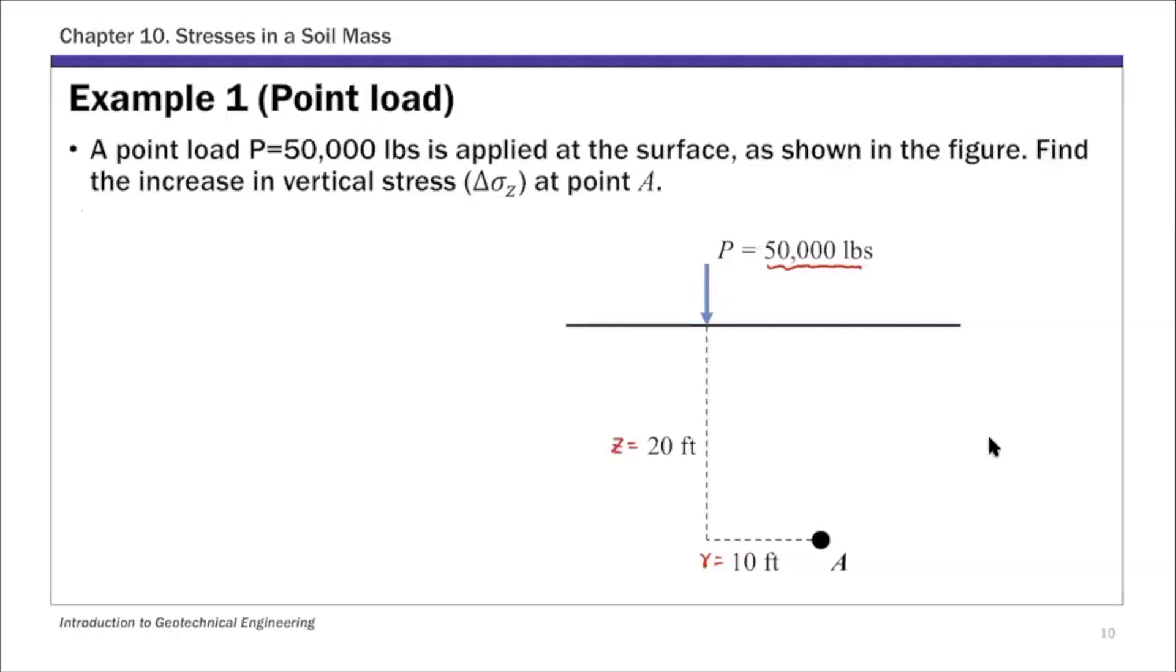So at point A, we know the depth is 20 feet, and that horizontal distance, radial distance R, is 10 feet.